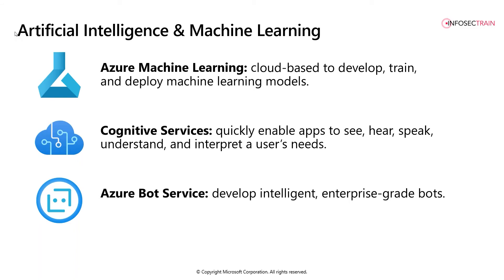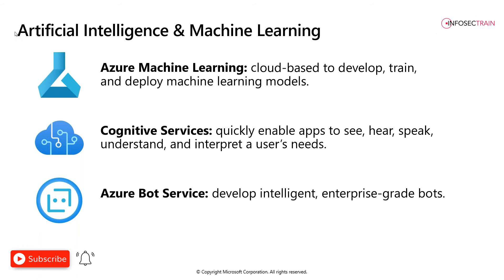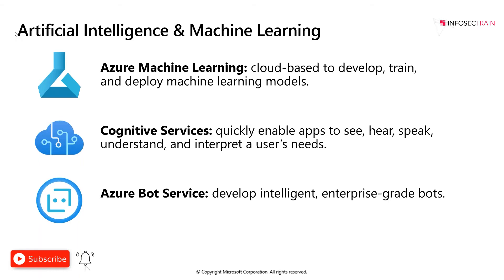There is also Speech Service, which converts speech into text and text into natural-sounding speech, and translates one language to another. It also has features like verifying and recognizing a speaker's voice. Apart from language and speech, Cognitive Services also includes Vision Service, which can identify pictures and video, and Decision Services, which can help you take decisions — for example, removing offensive content from data sources like Twitter.